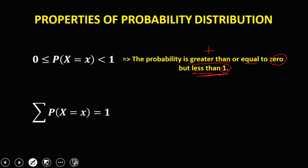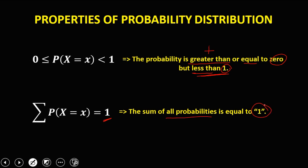Then for the second property: the sum of all the probabilities is equal to 1. So these are the two properties of probability distribution.